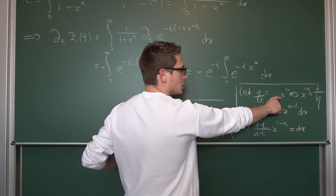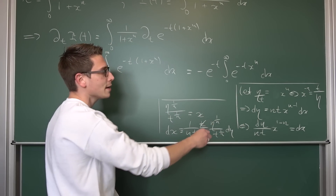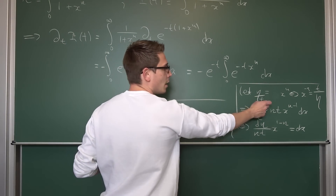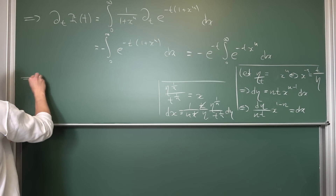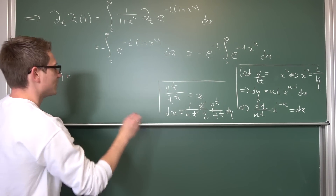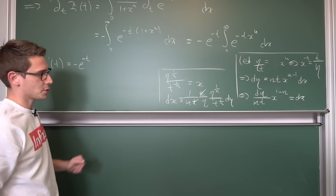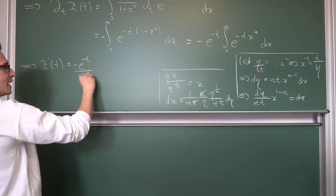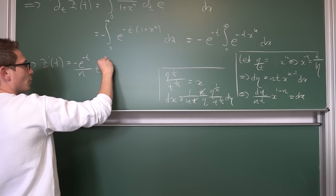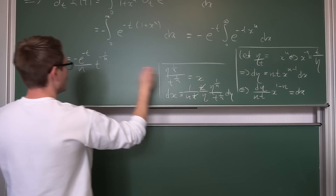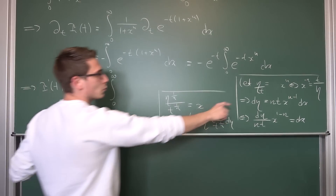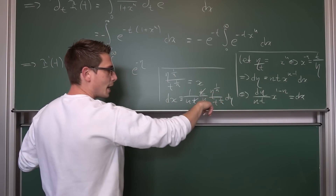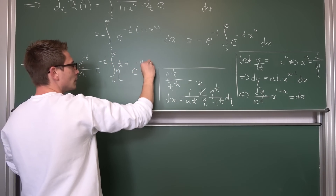Regarding the bounds after the substitution: if x goes to 0, then eta over t also goes to 0, so the lower bound stays. If x approaches infinity, since we're on a positive interval and t is strictly greater than 0, eta over t also approaches infinity. So I prime with respect to t is negative e to the negative t, times 1 over n times t to the 1 over nth power — giving us 1 over n and t to the negative 1 over nth power — times the integral from 0 to infinity of e to the negative eta times eta to the 1 over n minus 1 power, integrated with respect to eta.